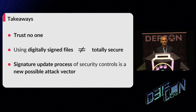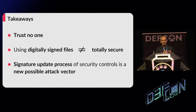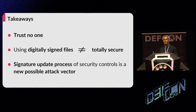A little bit about takeaways. Trust no one — even the most reliable security controls might be used as a loophole by adversaries, and the architecture and work process should be checked and verified in a continuous security validation process. Secondly, using digitally signed files does not always necessarily mean totally secure — security vendors should always verify at every step of the process that the trust was not broken. Finally, the signature update process of security controls is probably a new attack vector, and we believe additional research is very important.